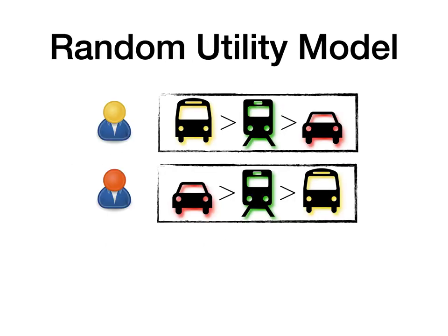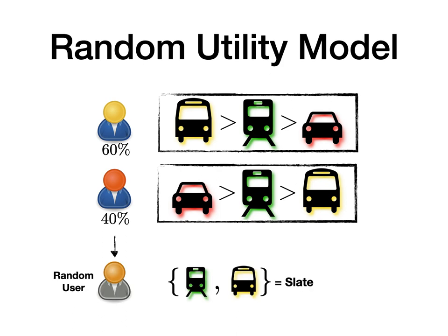How do RAM or Random Utility Models work? Well, suppose we have two types of users, yellow and orange, which have their preferences over all the options in the world. Let's say that the yellow users are represented in 60% of the population, whereas the orange users are the remaining 40%. When a random user gets drawn and the slate is maybe trains and buses, we will see that the random user will select buses with probability 60% — that is, with the probability of that user being yellow — and trains with probability 40%, the probability of the user being orange.